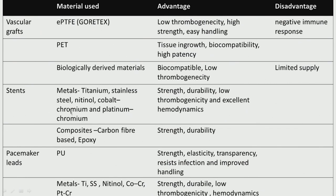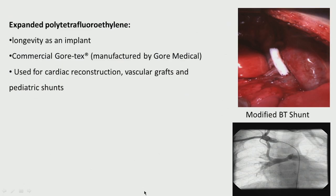Coated stents and drug-eluting stents are very good — durable, low thrombogenicity, excellent hemodynamics. Composites — carbon fiber-based, epoxy — also have very good strength. For pacemaker leads: polyurethane, and metals like titanium, stainless steel, cobalt-chromium, platinum-chromium are used.